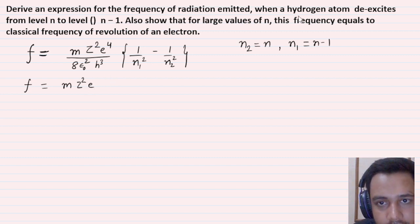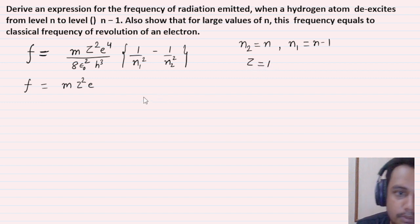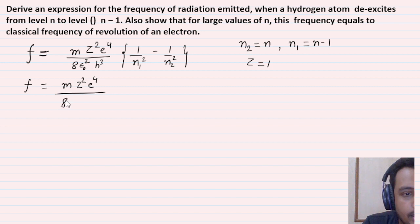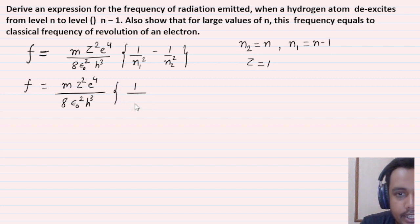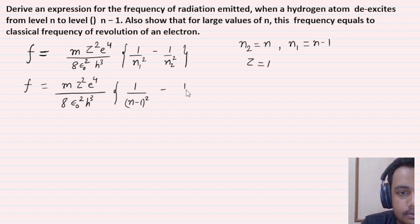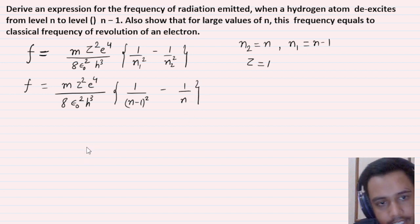For hydrogen atom, Z = 1, so Z can be removed. Now substituting: N1 is given as N-1, and N2 is given as N. So f = me⁴ / (8ε₀²h³) × [1/(N-1)² − 1/N²].